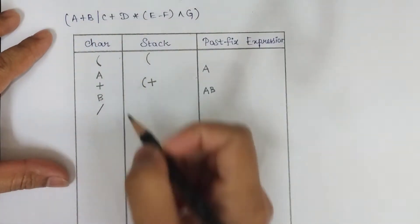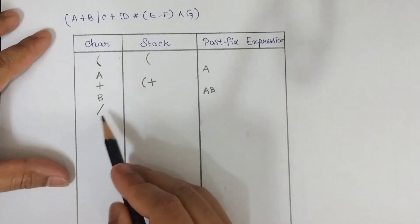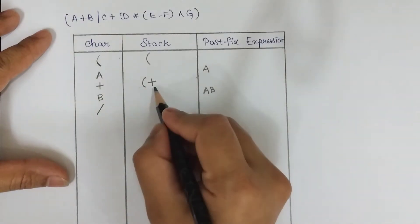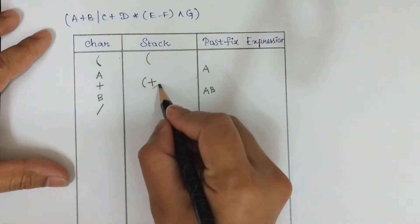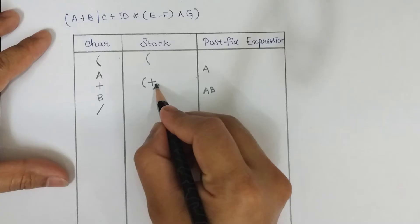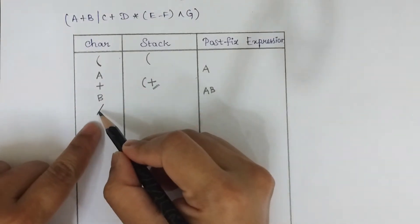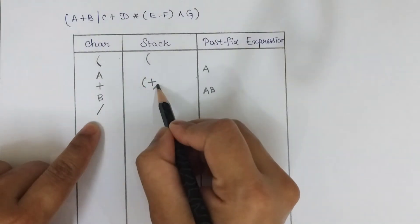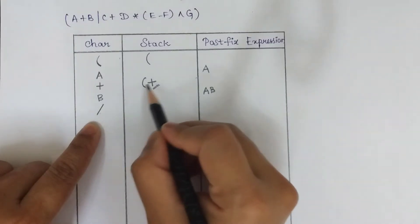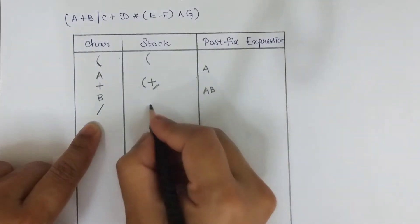The division operator should be pushed into the stack, but before pushing, check the top of the stack. The top of the stack has the plus operator. When you compare this new operator with the operator on top of the stack, the new operator has higher precedence.